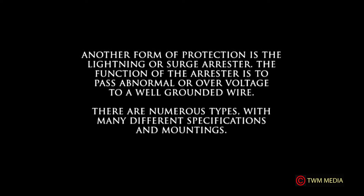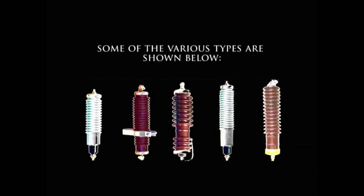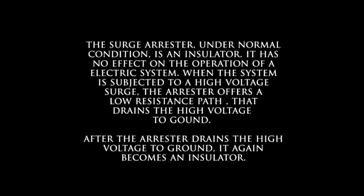Another form of protection is the lightning arrestor. The function of the arrestor is to pass abnormal or over-voltages to a well-grounded wire. There are numerous types with many different specifications and mountings. Here we see various lightning and surge protectors in a small electric substation. The surge arrestor, under normal conditions, is an insulator and has no effect on the operation of an electric system. When the system is subjected to a high voltage surge, the arrestor offers a low resistance path that drains the high voltage to ground. After draining the high voltage to ground, it again becomes an insulator.